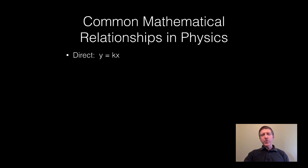So a direct relationship you can express as y equals k times x. Two variables y and x, one constant k.